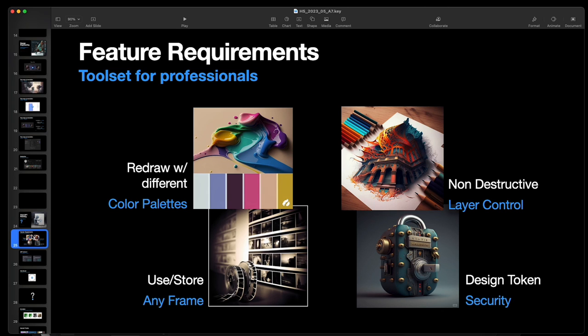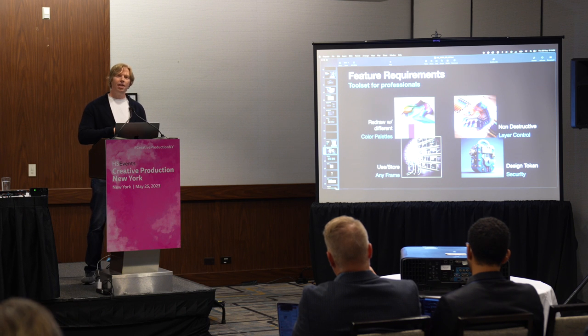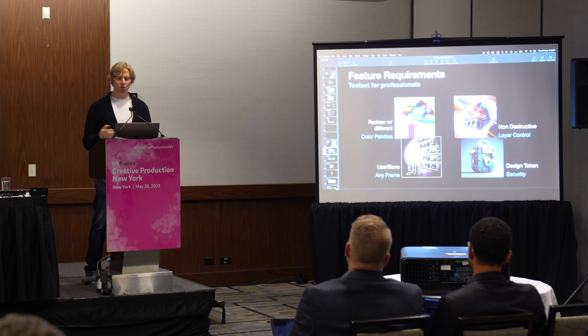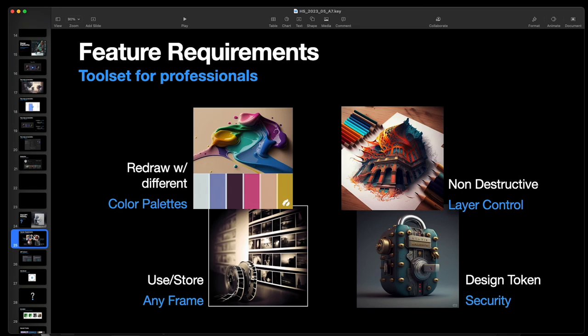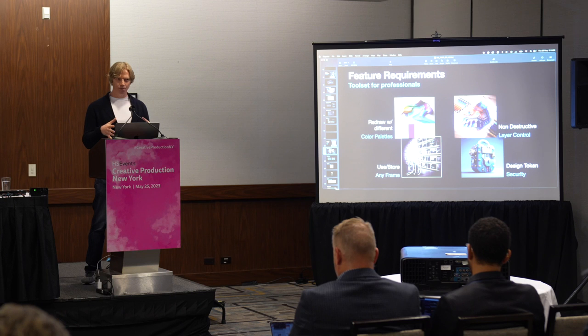We also want non-destructive layer control. Inside of this painting, there are actually going to be layers. We want to be able to use image prompts — any image coming in and every frame being written, we want to use in a future iteration. And then most importantly, you want your design token security, because all of the past scraping of public images and code bases is how these things came to be. You should be in systems that lock in your proprietary work so you can monetize and protect your IP. That is extremely important.